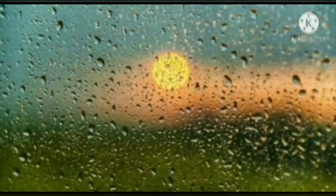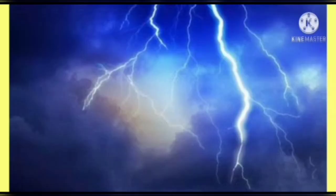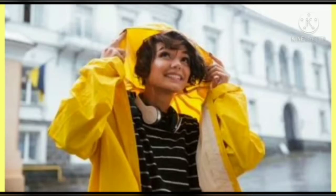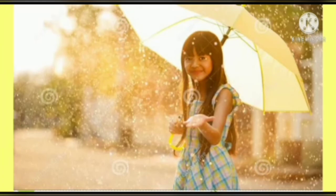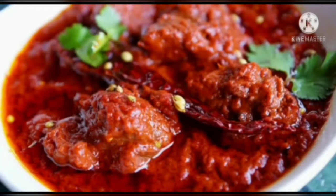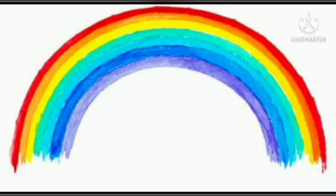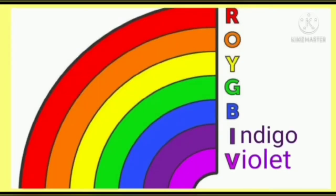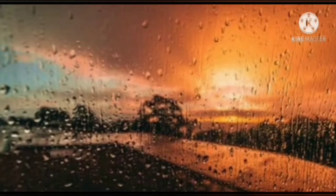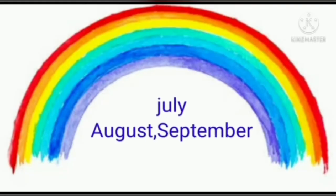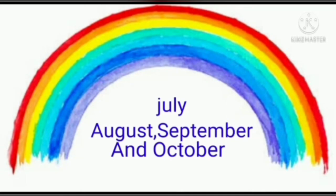In the rainy season, there will be water everywhere. We can see lightning and hear thunder. We wear raincoats and carry umbrellas, and like to eat hot and spicy foods. We also enjoy seeing rainbows. A rainbow has seven colors — violet, indigo, blue, green, yellow, orange, and red. When sunlight falls on rain droplets present in the atmosphere, rainbows are formed. July, August, September, and October are the months when we usually get rains.